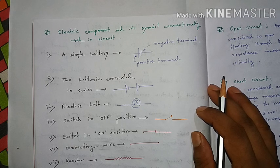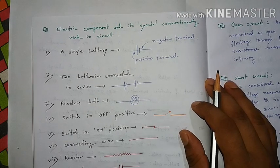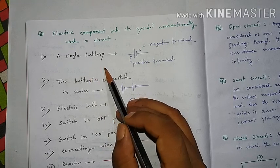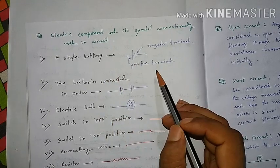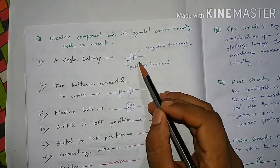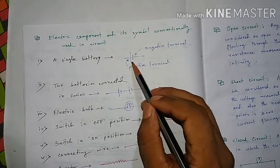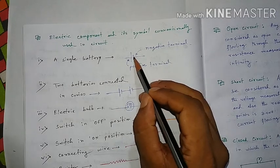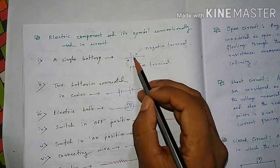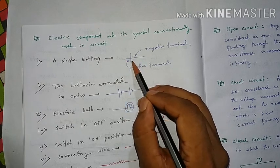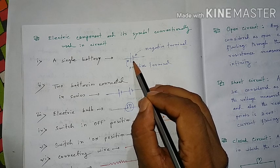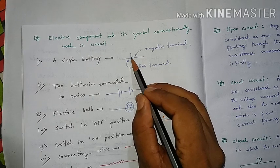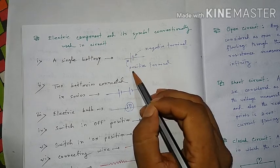This is the conventional symbol of the battery. This is the single battery symbol. The longer parallel line stands for the positive terminal, and the shorter line represents the negative terminal.